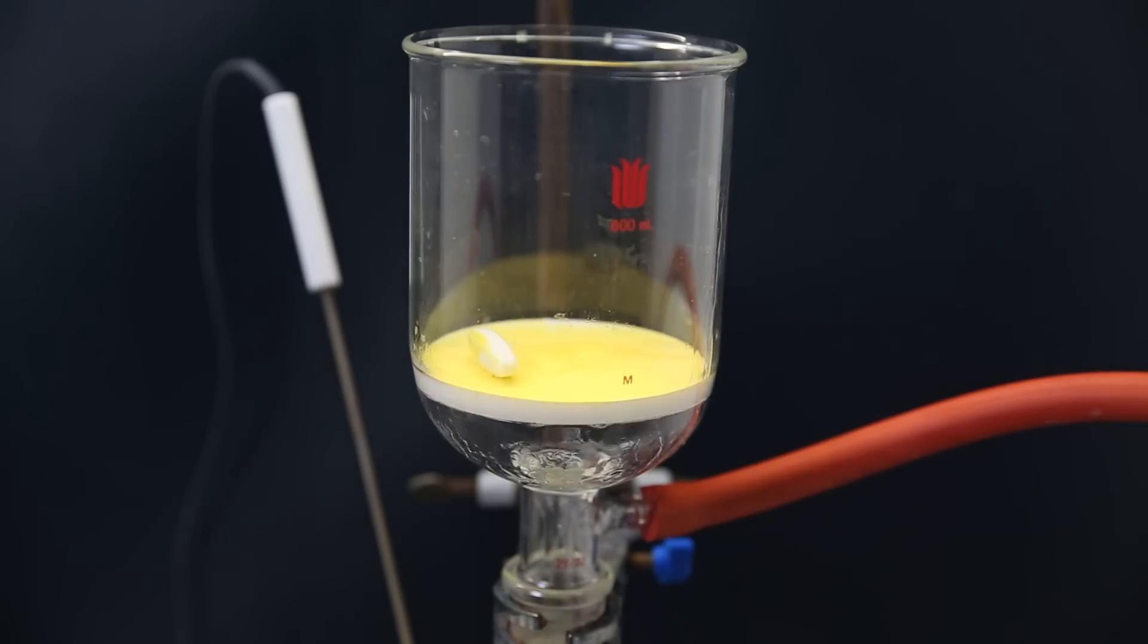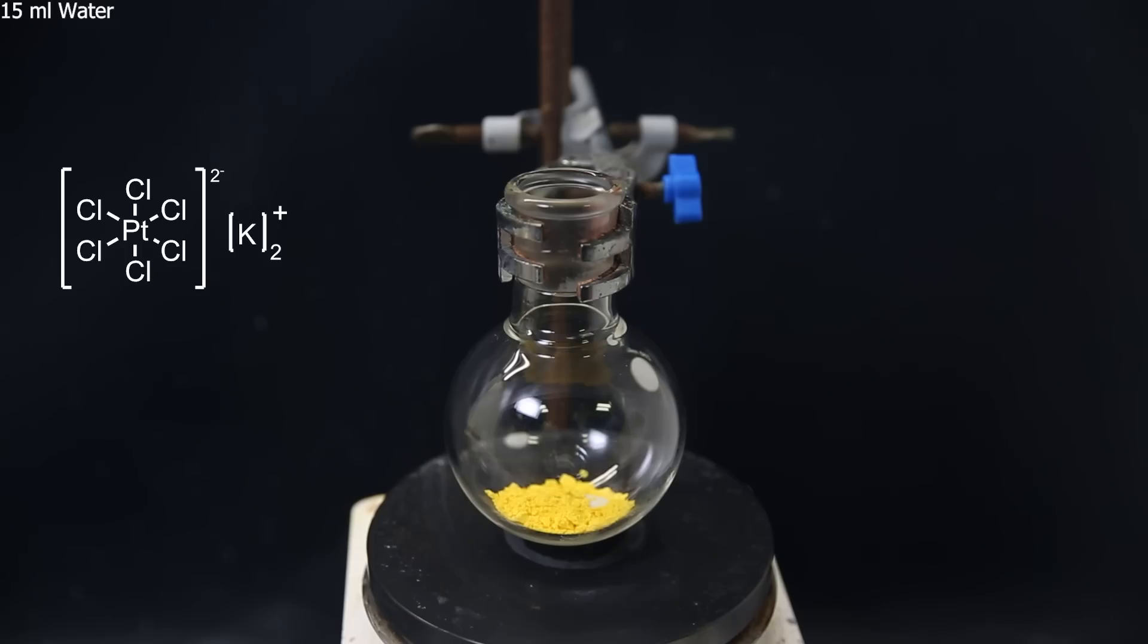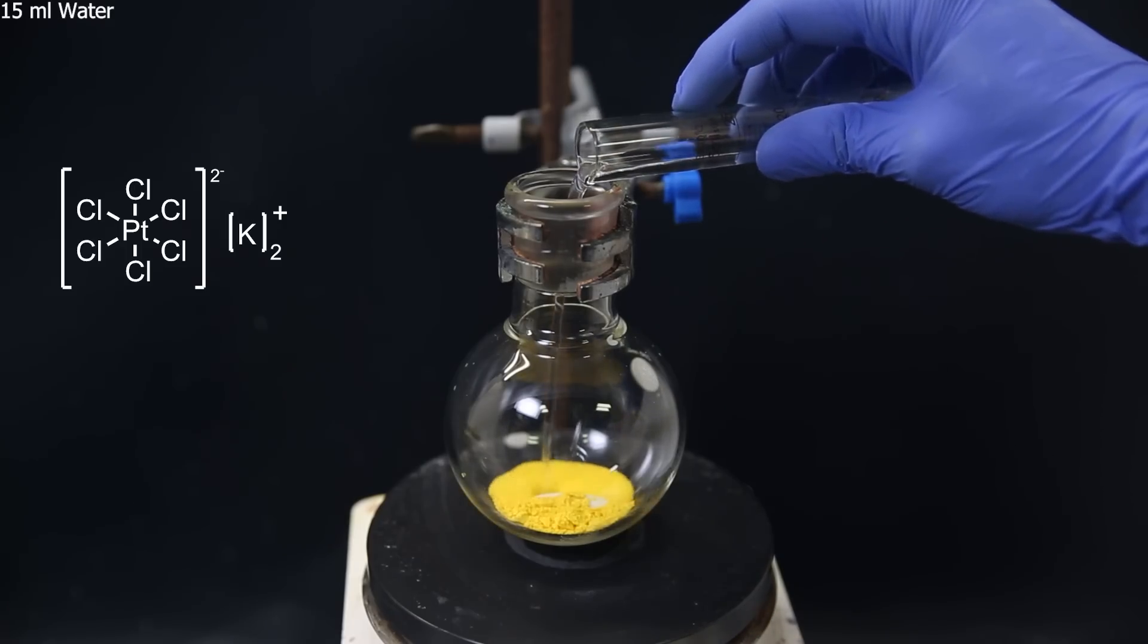I left it to dry on the filter for a while, and then scrape it all off and transfer it all to a flask. I then add 15 mils of water to suspend the potassium hexachloroplatinate and set it aside for a second.